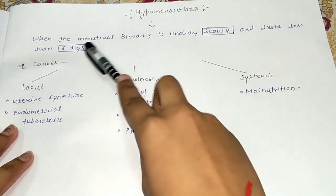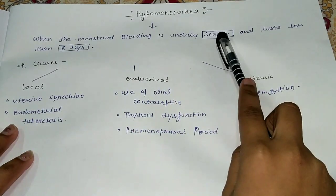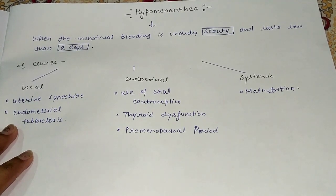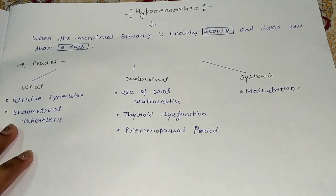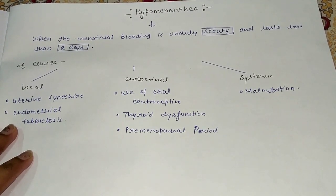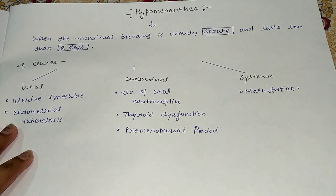Hypomenorrhea is when the menstrual bleeding is unduly scanty, meaning there is a lot less bleeding. For patients it means they use very few pads and the bleeding lasts less than 2 days. Normal periods involve 5-6 days of bleeding at least, so if it is less than 2 days and scanty, we call it hypomenorrhea.